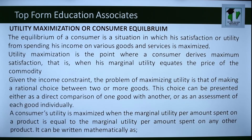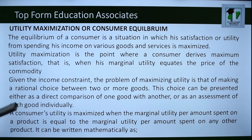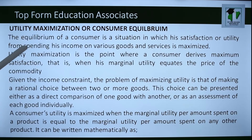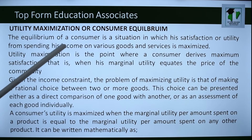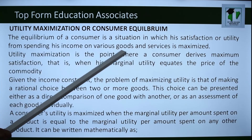Consumer equilibrium and utility maximization: when is utility maximized? Utility maximization is the point where the marginal utility per price of a commodity is equal to the marginal utility per price of other commodities. For a single commodity, utility is maximized where the marginal utility of that product equals its price. Consumer equilibrium is defined as the situation where the satisfaction or utility from spending income on various goods and services is maximized.